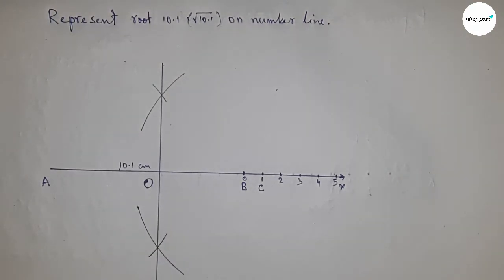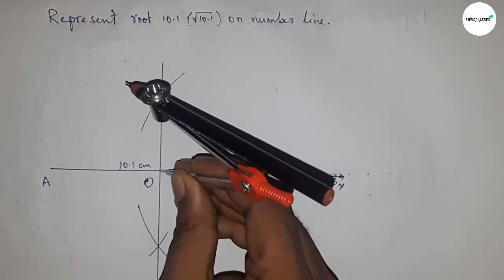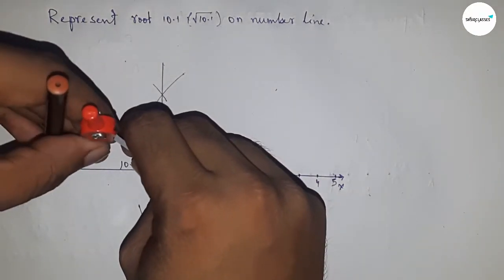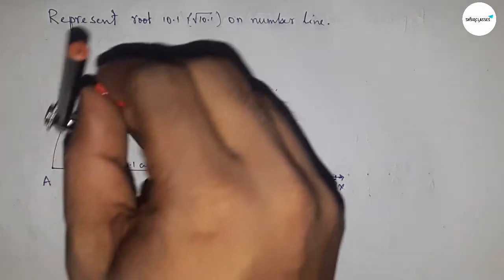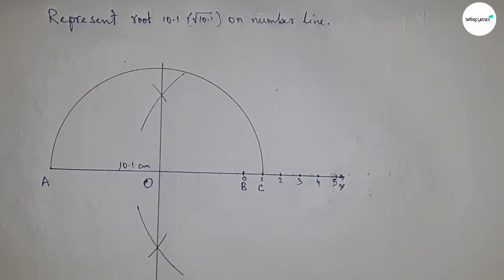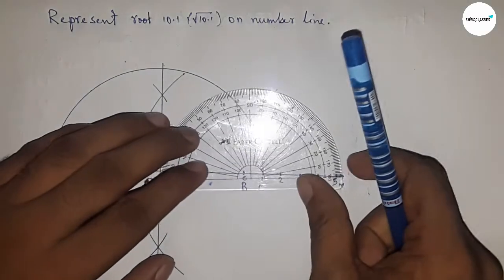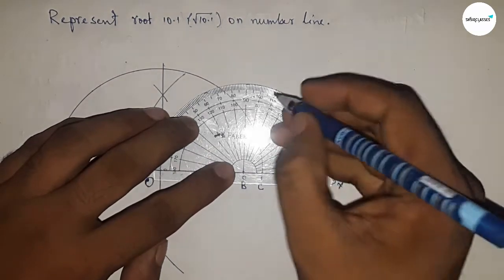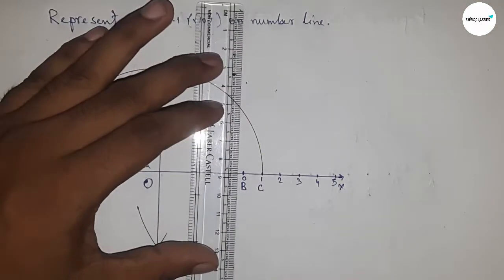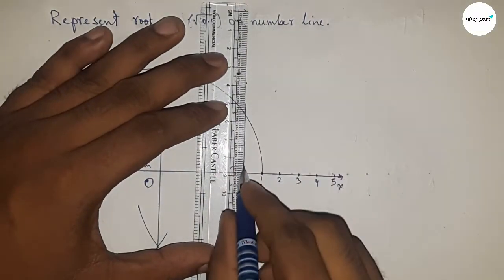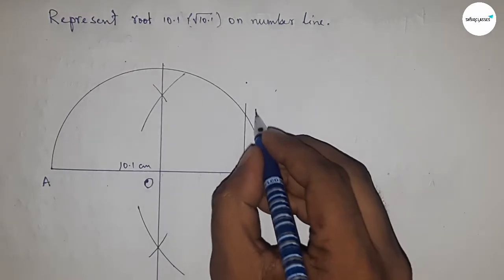Now taking length OA and OC to draw a semicircle. Now drawing 90 degree angle on the point B by using protractor. So drawing 90 degree. Now joining this which meet the semicircle at a point D.